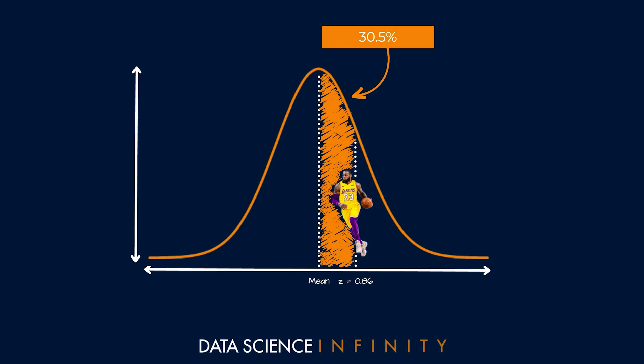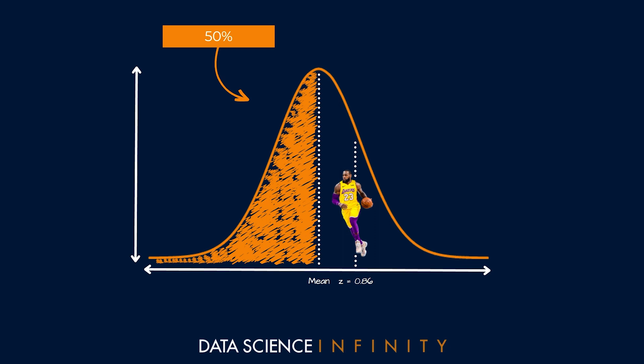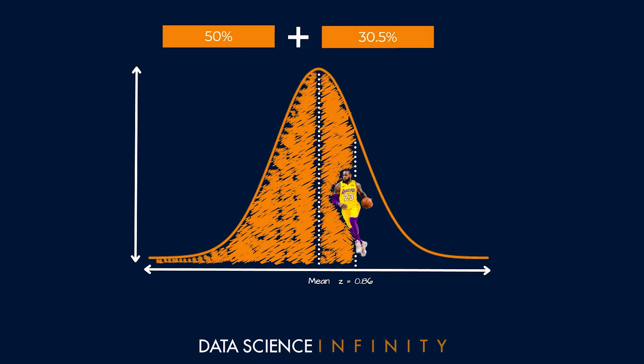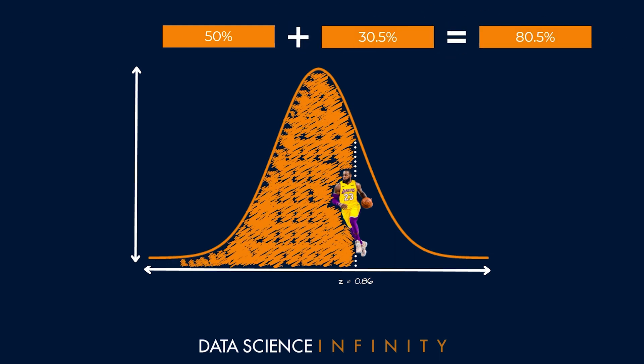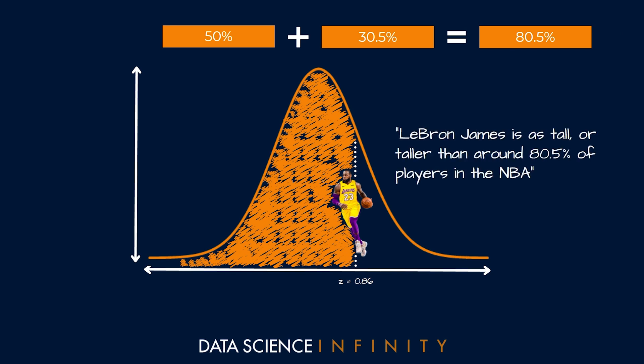We haven't yet answered our specific question, but we're getting closer. In part two of this series we discussed that since a normal distribution is symmetrical, 50 percent of observations lie on each side of the mean. This means we can calculate that 50 percent plus 30.5 percent equals 80.5 percent — in other words, LeBron James is as tall or taller than around 80.5 percent of players in the NBA.